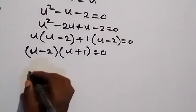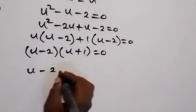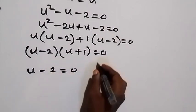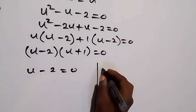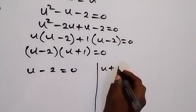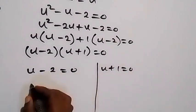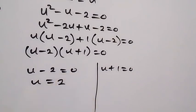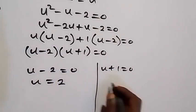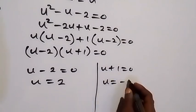We have two cases: u minus 2 equals 0, and u plus 1 equals 0. From the first case, u equals 2. From the second case, u equals minus 1.